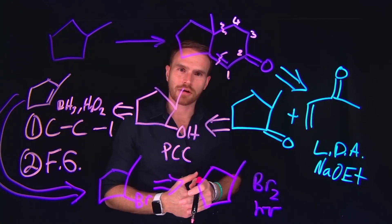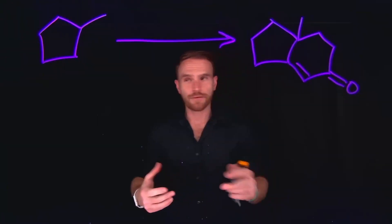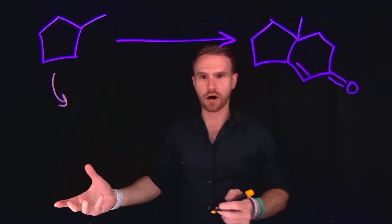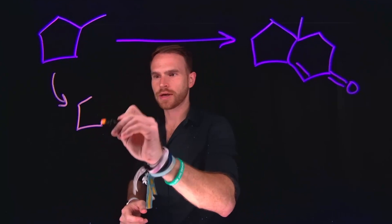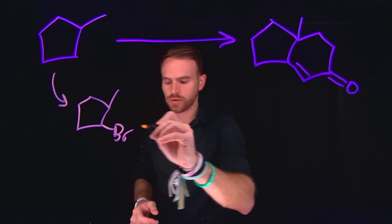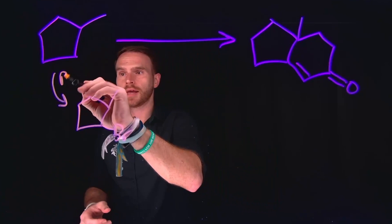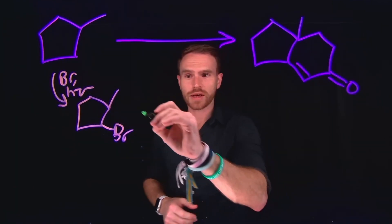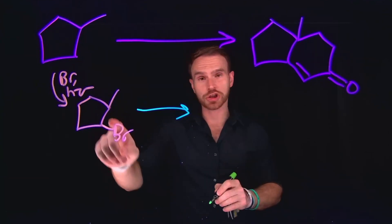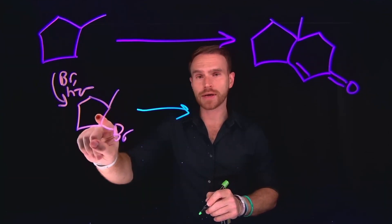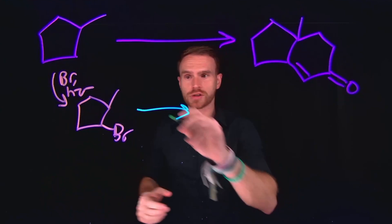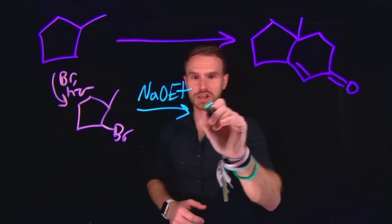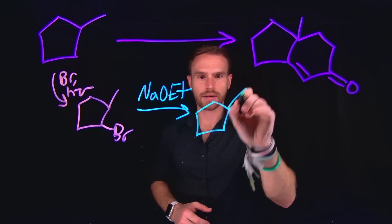Now let's take a look at what this might look like in the forward direction. We begin by brominating at the anti-Markovnikov carbon chain in order to generate our alkyl bromide. Remember that in order to do this, we needed to use a reagent like bromine in the presence of light or hν. From here, we can do an elimination reaction, ensuring that we're forming the alkene at this position, and in order to do that, we could use something like sodium ethoxide in order to generate our brand new alkene at this position.